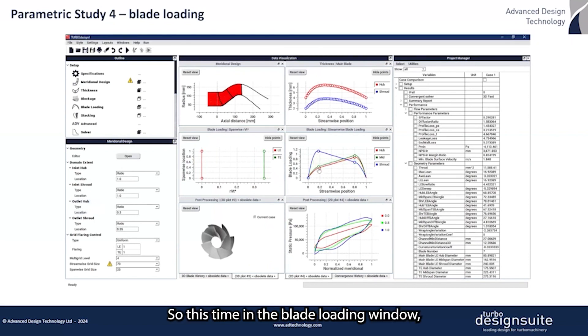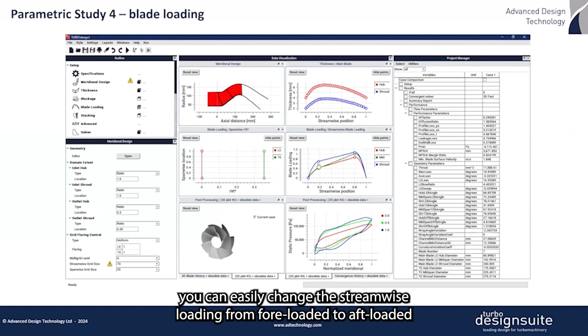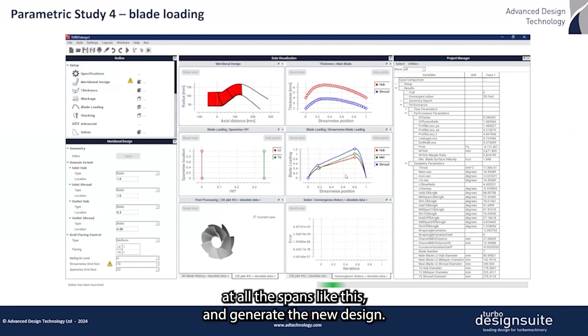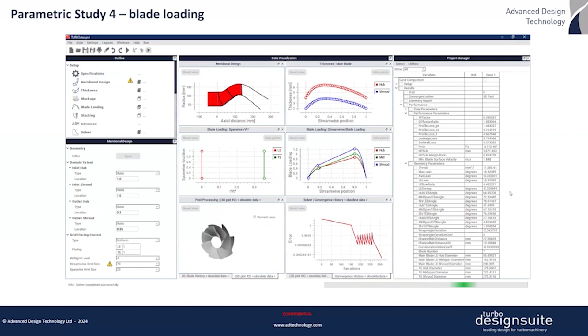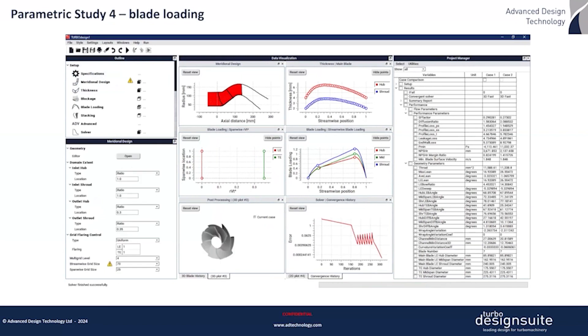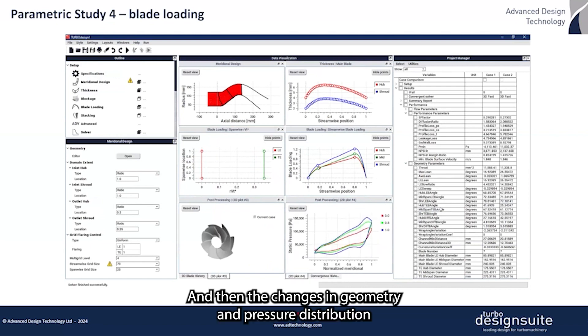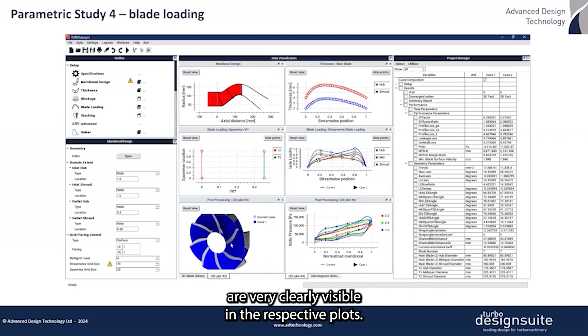This time in the blade loading window, you can easily change the streamwise loading from foreloaded to aftloaded at all the spans and generate the new designs. The changes in geometry and pressure distribution are very clearly visible in the respective plots.